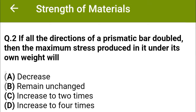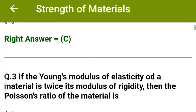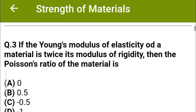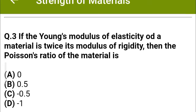Next question: If all the dimensions of a prismatic bar are doubled, then the maximum stress produced in it under its own weight will — option A: decrease, option B: remain unchanged, option C: increase to two times, option D: increase to four times. The correct answer is option C: increase to two times.